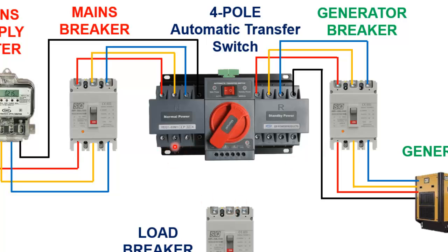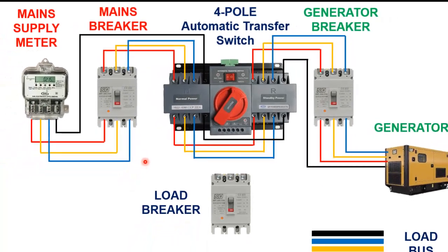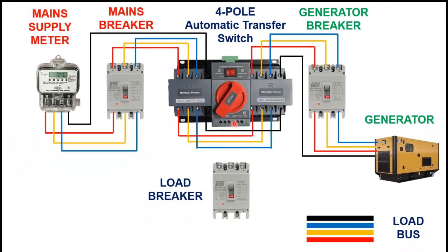Now connect all three phases and neutral of both outputs with each other, or simply short both outputs of ATS in proper sequence. Now make the connection from the output of ATS with the input side of the load circuit breaker. Now finally connect the output of the load circuit breaker with the load bus.